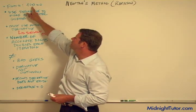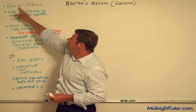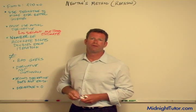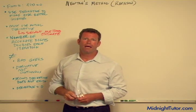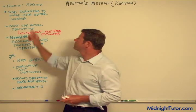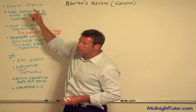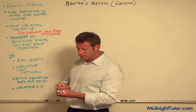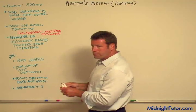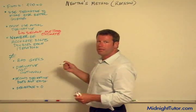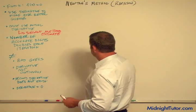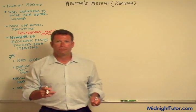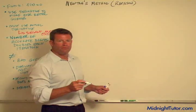We're given this function f of x, and we want to find all the different points at x where the function is zero, meaning the function crosses the x-axis. Let's draw our generic function.